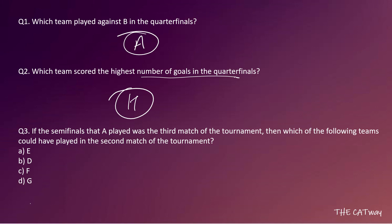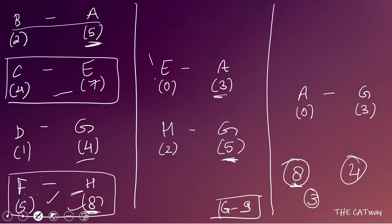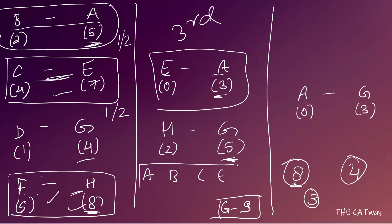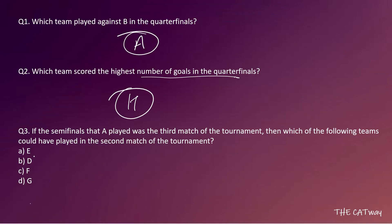Question 3: If the semi-final that A played was the third match of the tournament, which team could have played in the second match? If A's semi-final is the third match, the first two matches involve A's quarter-final and E's quarter-final in some order. So the only possible teams for the second match are A, B, C, or E. Checking the options — E, D, F, and G — only E is among those possible teams. The correct answer is option A: team E.